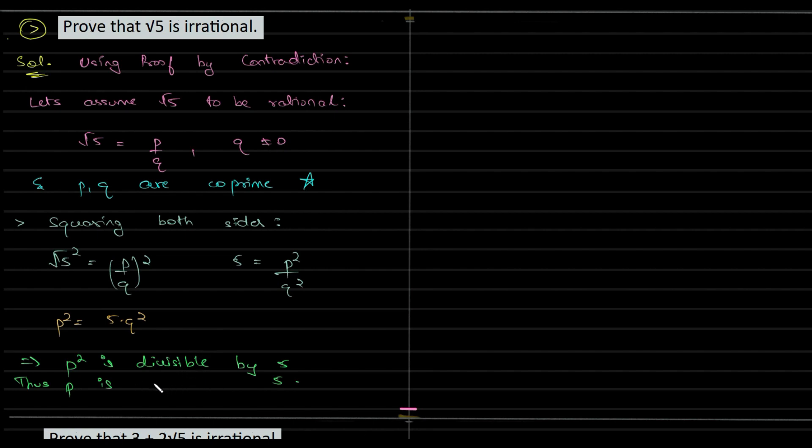The same thing. p is divisible by 5. Therefore, I can write p as 5 into some integer n where n is an integer. The next step is to substitute p in equation 1. So we have 5n the whole squared is equal to 5 into q squared.